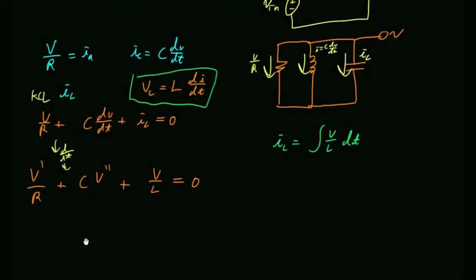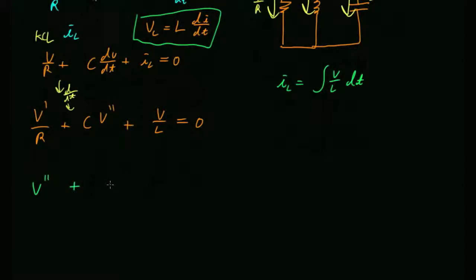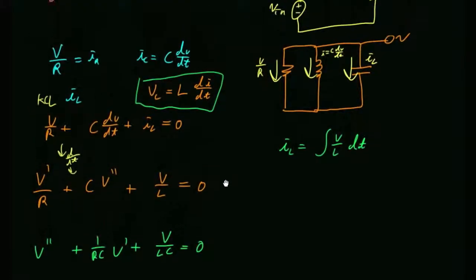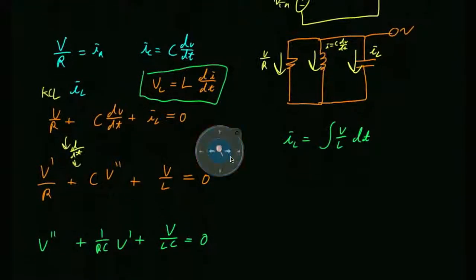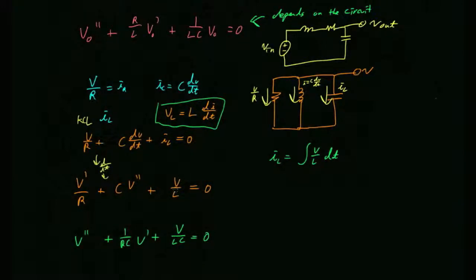Cleaning up: v'' + v'·(1/RC) + v·(1/LC) = 0. This is a different differential equation from the series RLC. Interestingly, in both cases the natural frequency is still set by the inductor and capacitor — that sets the 'sloshing frequency.' Energy sloshes back and forth between L and C, and the resistor dissipates some of it.